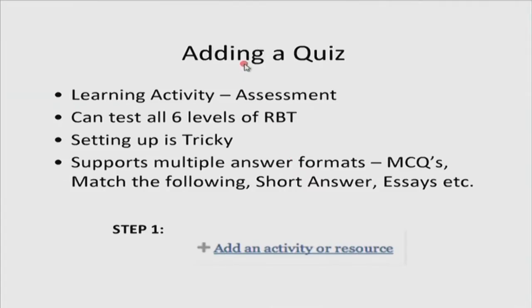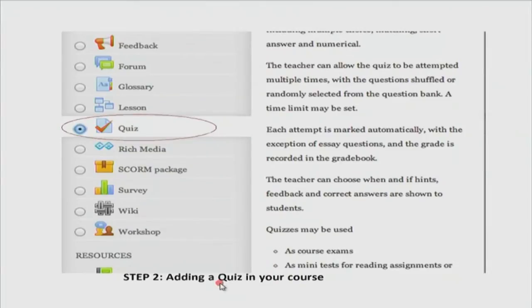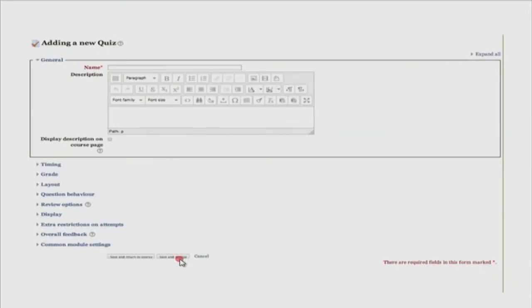Next is the quiz activity. The learning purpose is for assessment. It can be set up to test all six levels of revised Bloom's taxonomy. Setting up is tricky because you need a plan on what Bloom's level you are targeting and what kind of questions you want, since there are multiple options: MCQ, match the following, short answer, or essays. Normal setup is the same — add an activity or resource, select the quiz activity, and the general settings are displayed.